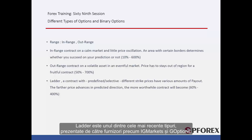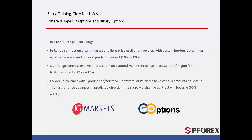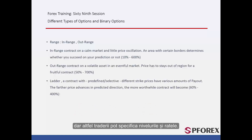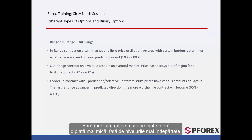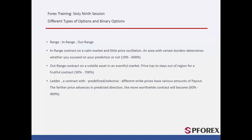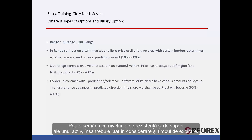Ladder is one of the most recent types, offered by providers such as IG Markets and G Options. Strike prices with different levels and various payout amounts can be represented in predefined rates, or traders can specify the levels and rates themselves. The closer rates have less payout than further levels. To derive a specified amount from the contract, the price must cross and leave behind the given level at the end of expiration. It may resemble the resistance and support levels of an asset.